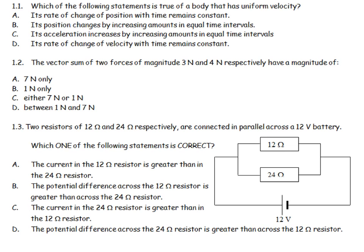Which of the following statements is true of a body that has uniform velocity? Uniform velocity means it would have zero acceleration, and uniform velocity would mean that the change in displacement over the change in time would remain equal. So its rate of change of position, displacement, remains constant. That seems reasonable. Its position changes with increasing amounts? No, it needs to stay the same, uniform.